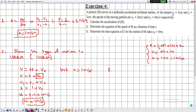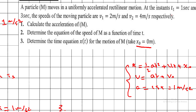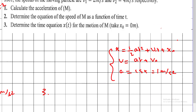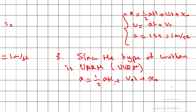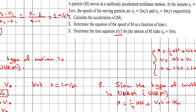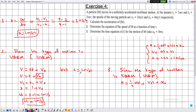For part 3, the equation x(t): since the type of motion is UARM (special case of UVRM), x = ½at² + v₀t + x₀. With a = 1, v₀ = 1, and x₀ = 0 (given), the equation is x = ½t² + t. This is a parametric equation expressing x as a function of t.